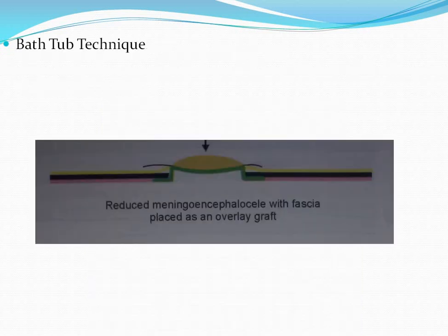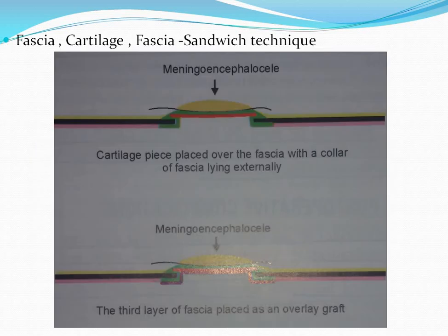The bath-plug technique: a meningocele is reduced and fascia is placed over it like an overlay graft. The fascia-cartilage-fascia sandwich technique: a meningoencephalocele is reduced, the cartilage plug is placed over the fascia with a collar of fascia lying externally, and a third fascia is placed over it. So the order is: first fascia placed, then cartilage, then again a fascia is placed.